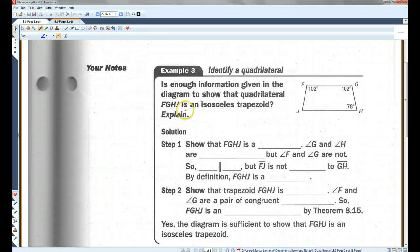Show that FGHJ is a trapezoid. Angle G and angle H are supplementary. So these two angles, if you add them together, they add to 180. But angle F and angle G are not.